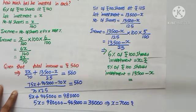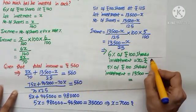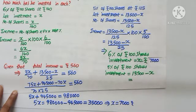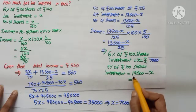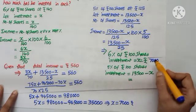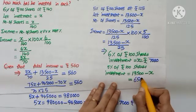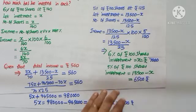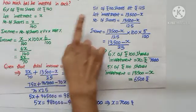So, 6% Rs. 100 shares investment is X, which is Rs. 7,000. And 5% Rs. 100 shares investment is 13,500 minus X: 13,500 minus 7,000 is Rs. 6,500. We have found out how much he has invested in each of the two shares.